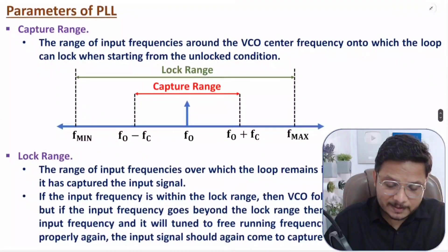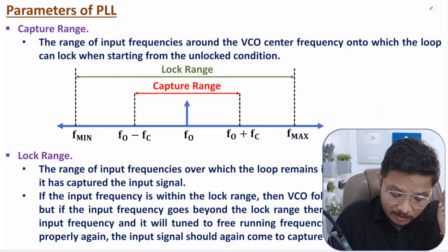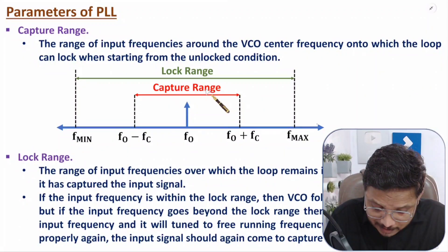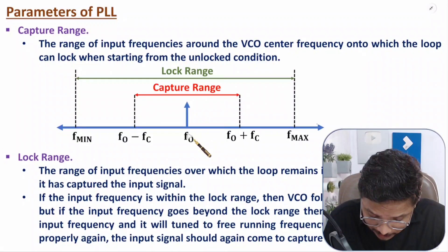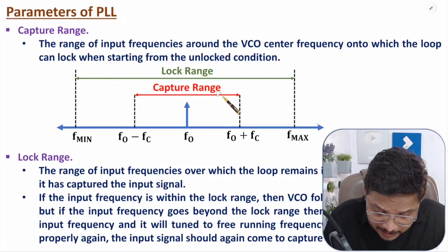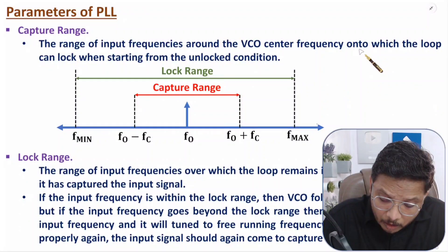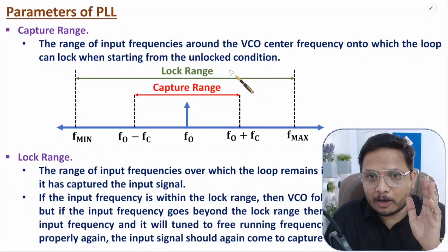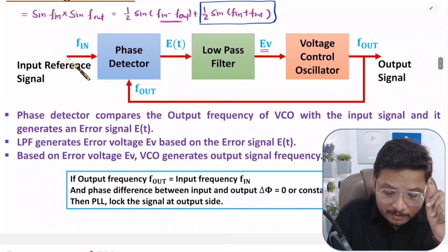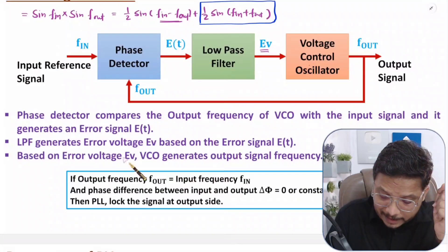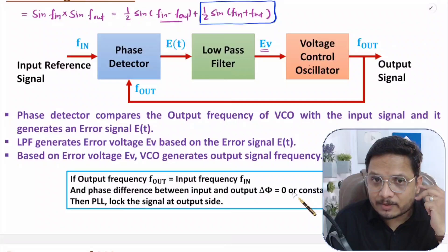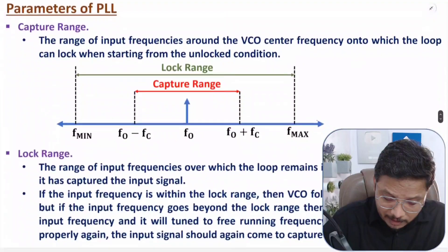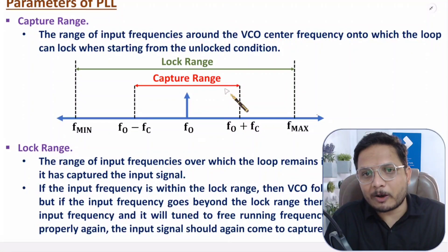Now let us talk about the parameters of Phase Lock Loop. There are two essential parameters. First is capture range — the range of input frequencies around the VCO center frequency (f_0) onto which the loop can get locked when starting from an unlocked condition. Initially the PLL is unlocked with f_out and f_in different. For locking to occur, f_in must be within the capture range; otherwise locking is not possible.